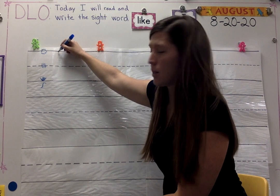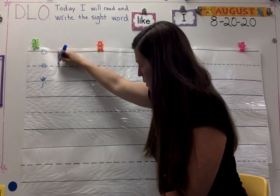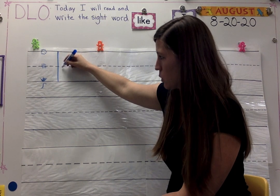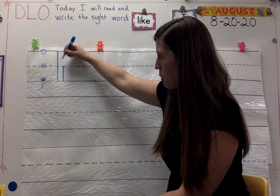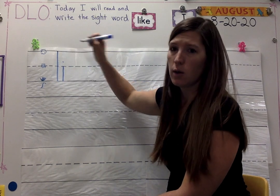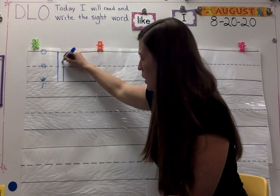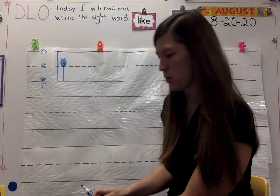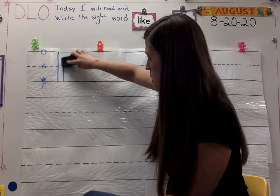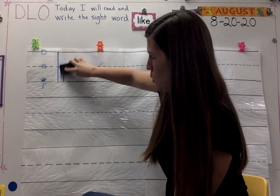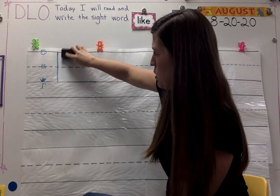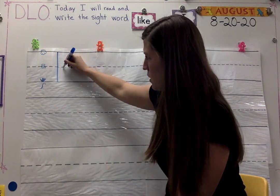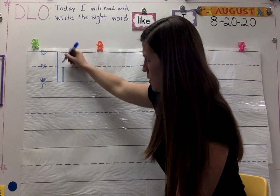L starts at the sky and it's a straight line down — it looks like the number one. I is short, so I'm going to start at the fence, go to the ground, jump up, add a dot. The one thing I don't want to see are lollipops — that is not the letter I. A lollipop is a sucker, it's a treat — it is not a letter. So mom and dad, whoever's helping you, no lollipops. I: short, start at the fence, down.